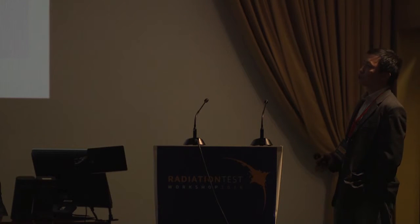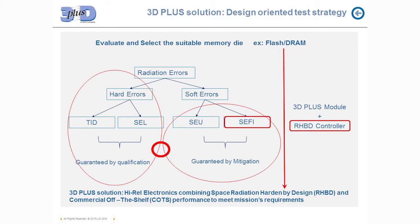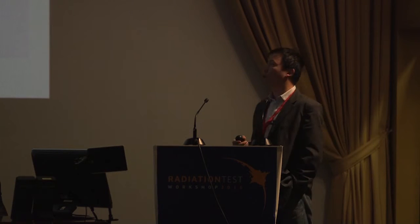Also, some commercial foundries have product long-life management programs where they keep the same part number but change the foundry and fab — this is highly risky for space traceability, because you don't know where it was manufactured, what materials or processes were used. They also combine die designs, making die mask verification very difficult. For example, with MLSC and SLSC using the same die where probably only the last metal layers are different, or even the same die with different voltages programmed inside — die mask verification is very difficult now.